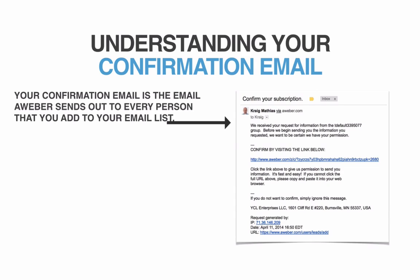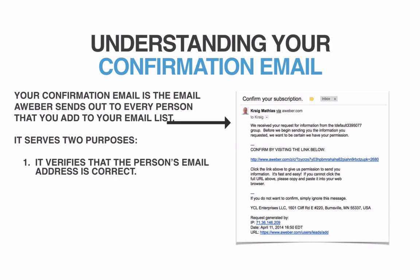That's what a confirmation email looks like from AWeber on the right there. Basic email, it's got a link in it — that's really the main thing. Your confirmation email is the email that AWeber sends out to every person that opts in to your email list. It serves two purposes. Number one, it verifies that the person's email address is correct. Sometimes people make mistakes and put the wrong email address in, which causes problems with bouncing and non-delivery. If they put in a garbage email address like fake@fake.com, we're not actually going to send them the content.